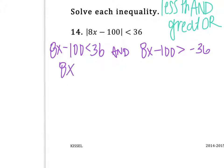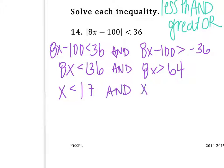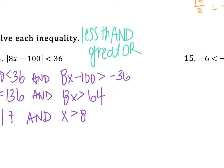8x is less than 136, and 8x is greater than 64. Divide by 8, I get x is less than 17 and x is bigger than 8. Can you think of numbers that are less than 17, but also bigger than 8? Of course, like 10. It doesn't say graph, so I'm not going to graph.